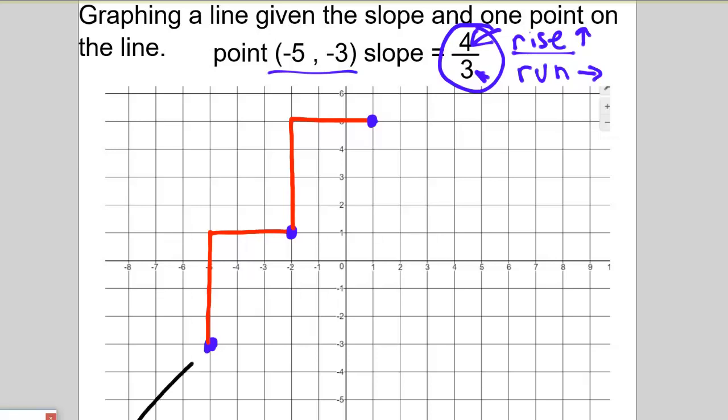But I'm going to go ahead and draw my line. Remember that these red lines right here are not actually part of the graph. They're just used to help me find the next point on the graph using the slope. So there's my line given a point that's on the line and the slope of the line.